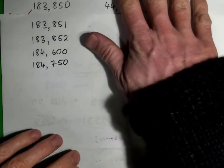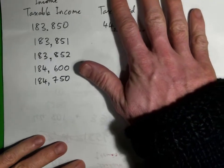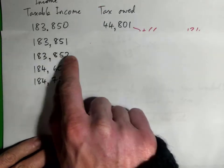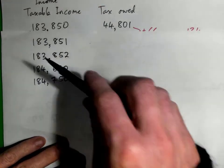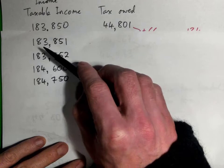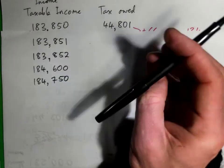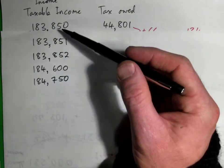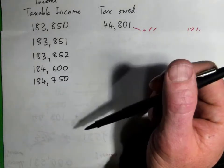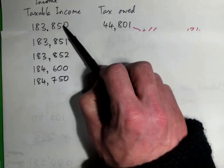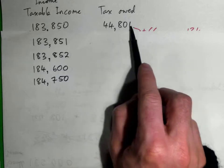So we've got to figure out the taxable income for these incomes. Let's start with this one. This is $183,851, which is, you might notice, $1 more than this. Now, if we earn this exact amount, we would have to pay this exact amount in tax, correct?